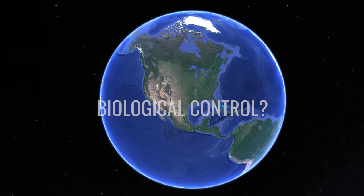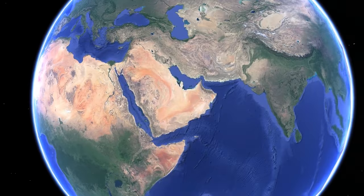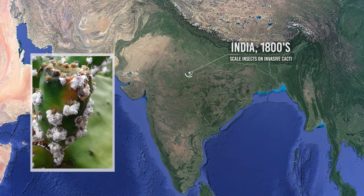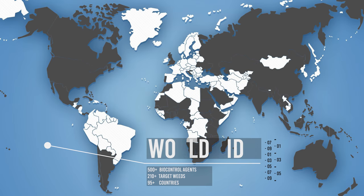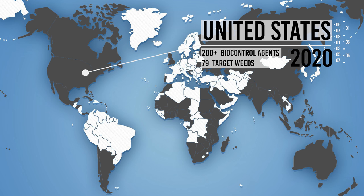The first intentional use of classical weed biocontrol dates back to the mid-1800s, when scale insects were intentionally released and redistributed around India and surrounding countries for the control of invasive cactus species. Since then, over 500 biocontrol agents have been released on over 210 weeds in more than 95 countries worldwide. In the United States, the first biocontrol agent release was made in 1902, and as of the year 2020, over 200 biocontrol agents have been introduced against 79 weed species.